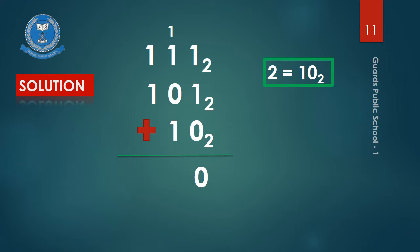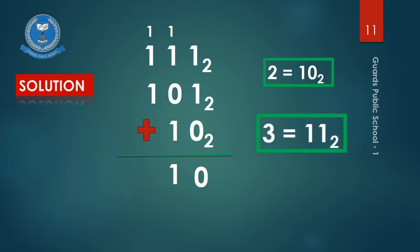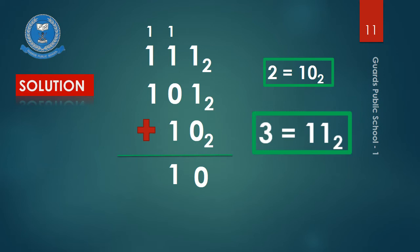Now 1 plus 1 is 2, plus 0 is still 2, plus 1 carry equals 3. We cannot write 3 here because 3 is not a base 2 digit. But in base 2 system, 3 equals 1, 1. So write down 1 here and 1 as carry. Again, 1 plus 1 is 2 and 2 plus 1 carry equals 3, which again equals 1, 1 with base 2. Write down 1, 1 in place of 3. Write down base 2 in the end. Your required answer is 1, 1, 1, 1, 0 with base 2.